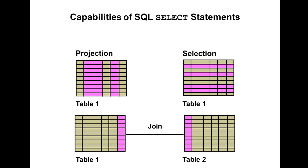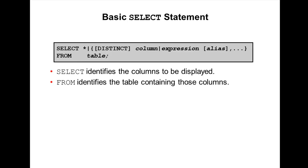What is projection? Projection refers to the columns retrieved by the query. Selection refers to the rows that are returned by the query. JOIN is data retrieved from one or more tables based on some conditions. I will explain how to retrieve data from multiple tables in the next tutorial. So what is the basic SELECT statement syntax?